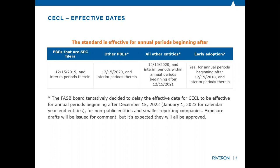Accounting standard changes are always a good way to look at the overall process. A lot of clients have done that with 606 and 842 — use it as an opportunity to improve a process since you already have to change it. ASC 326 lets you refine as you go through at any point in time, but it's always more efficient to do things right the first time when you can.